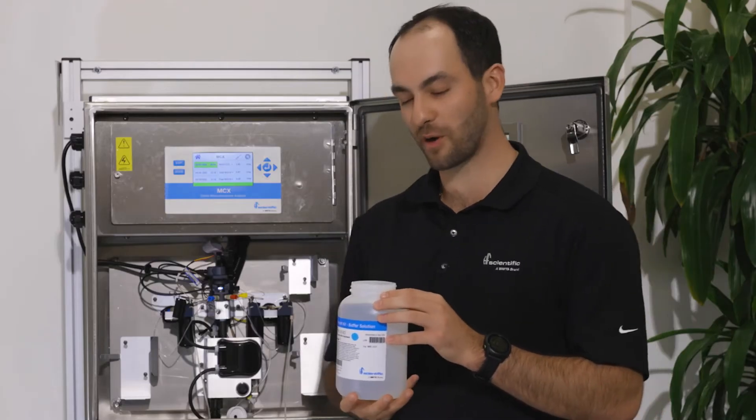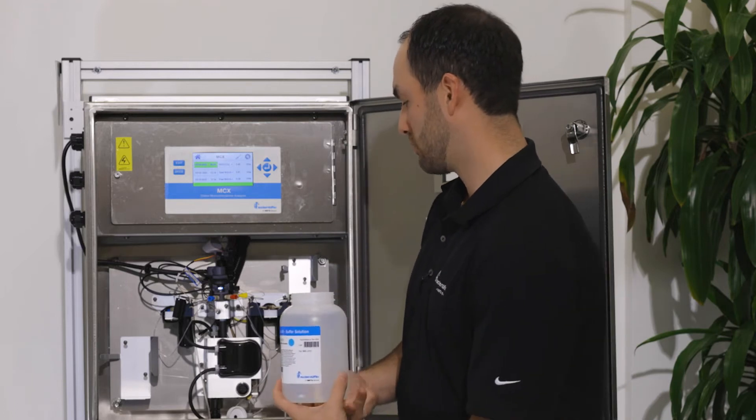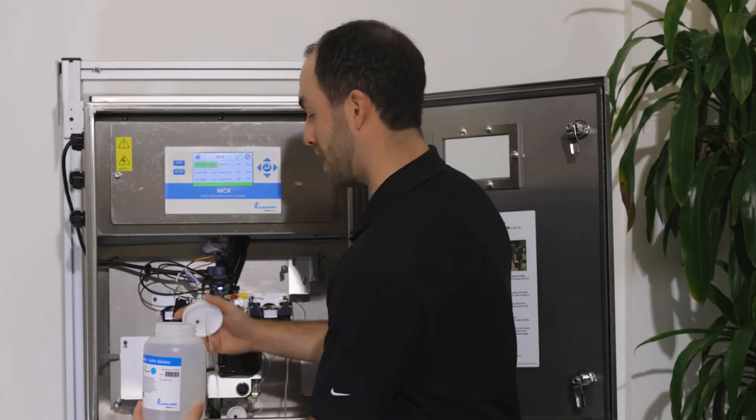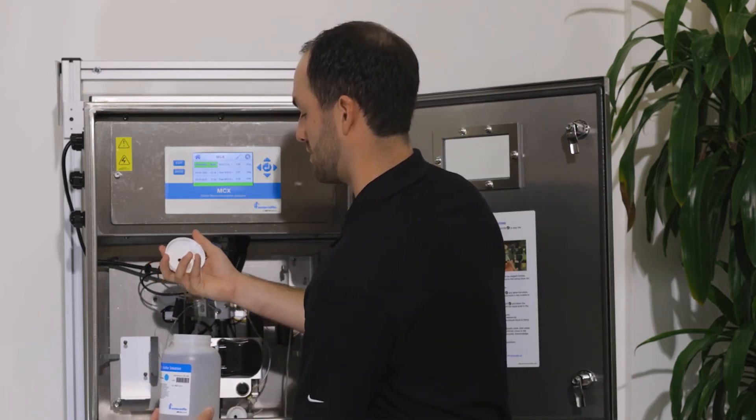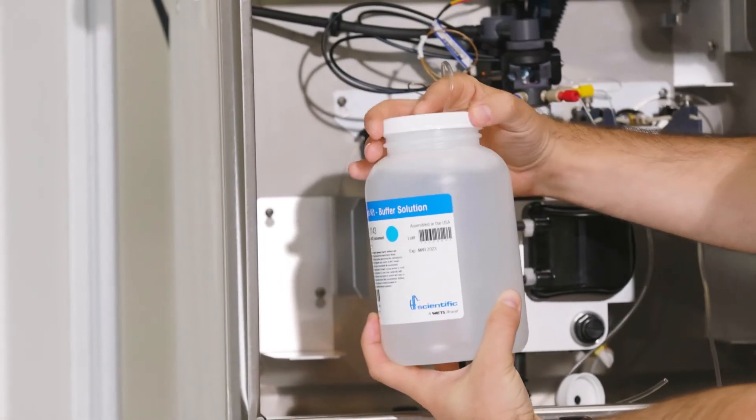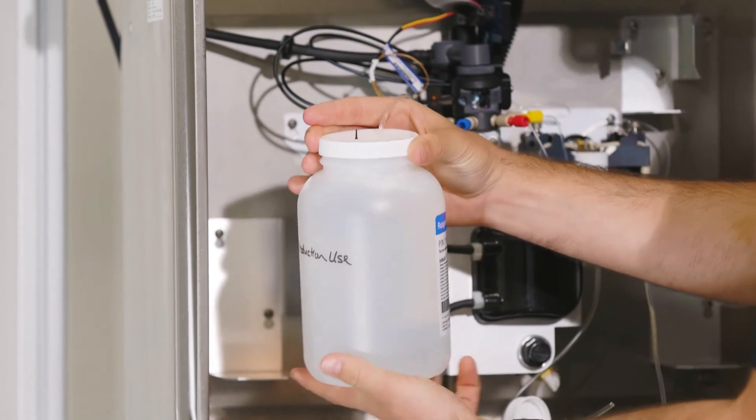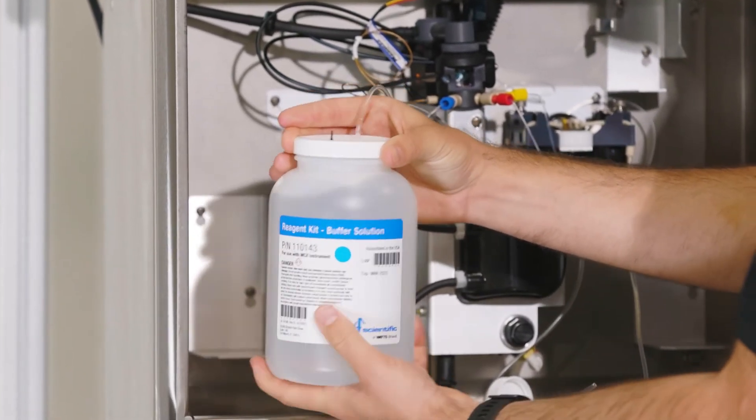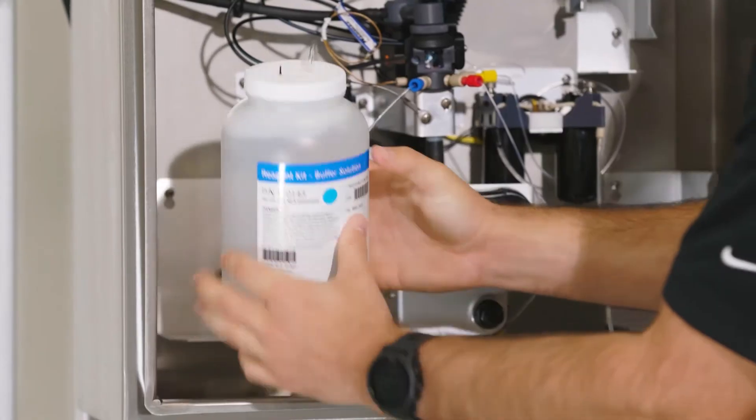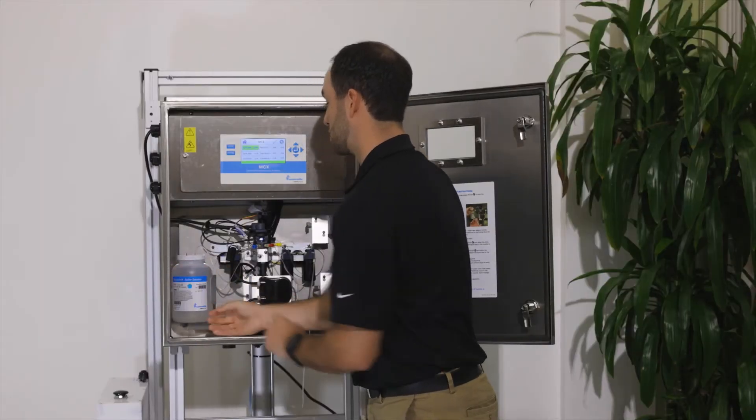We will begin by replacing our buffer solution. What we like to do is hold the bottle and put the line in, and then hold the cap in one place and twist the bottle into the cap. This will ensure that we're not twisting any of our lines inside the bottle. Place the reagent bottle into its spot.